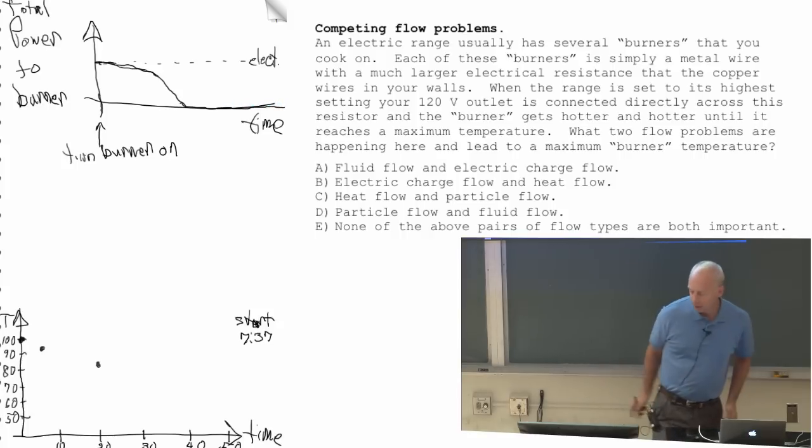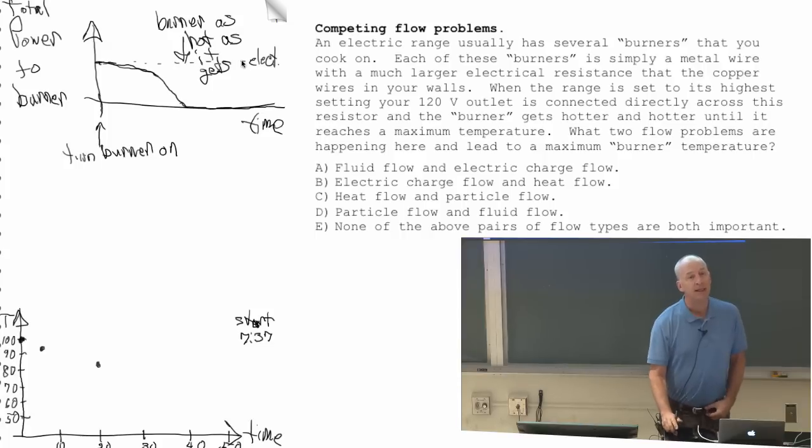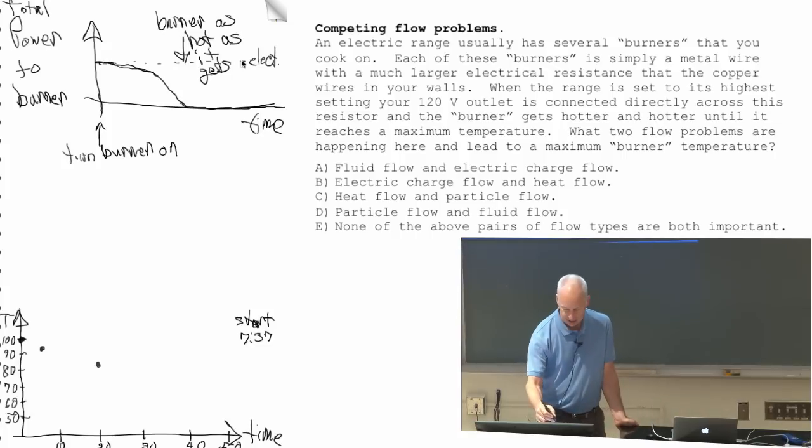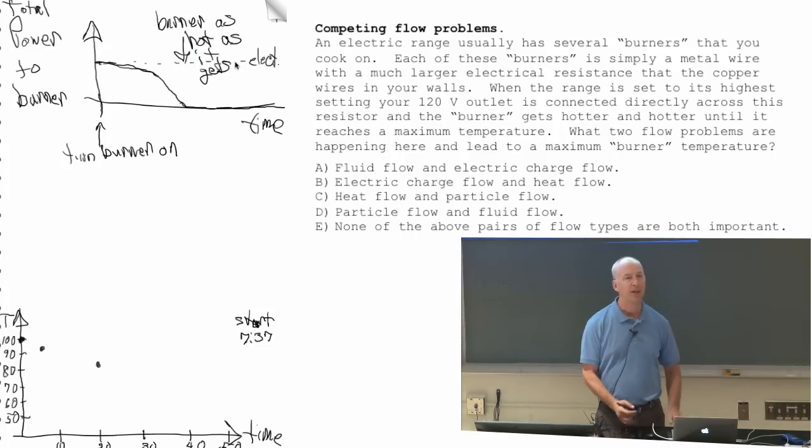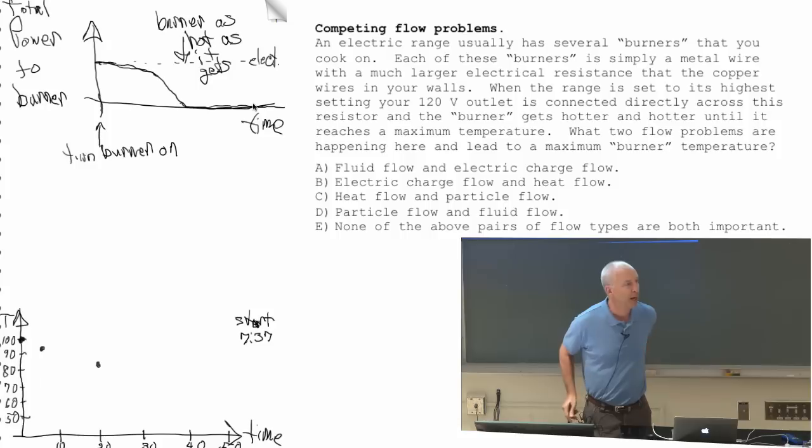And the total amount of power right here, then the burner is as hot as it can get. And the total power is constant, in fact zero, so that it doesn't get any hotter. There's power coming in, the dotted line is the electrical power coming in. And the solid line down here at zero is the total power, so the electrical power coming in is canceled by the heat flow due to the temperature gradient coming out. Heat flow coming out.